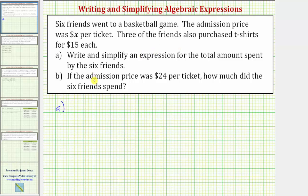the amount spent on the tickets would be six times X because each ticket cost X dollars, plus three of the friends purchased T-shirts for $15 each. So the amount spent on the T-shirts is three times 15.